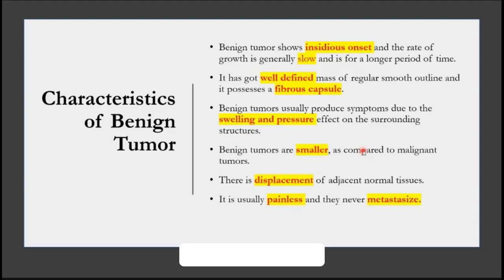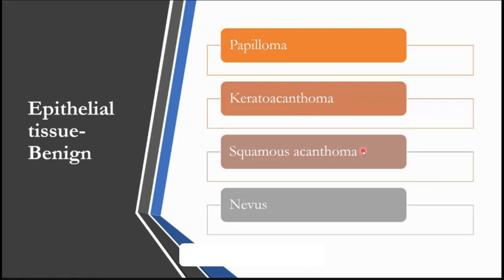The benign epithelial tissue neoplasms are squamous papilloma, keratoacanthoma, squamous acanthoma, and nevus. We're going to study only the papilloma, keratoacanthoma, and nevus today — the other two are very similar and I don't want to confuse you, and squamous acanthoma is quite rare. So we're going to discuss these three which are important and you should know.